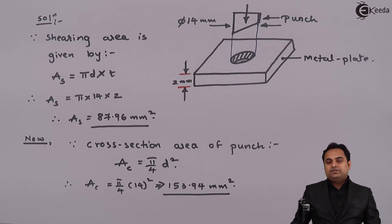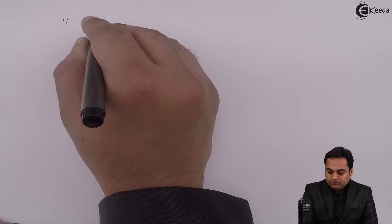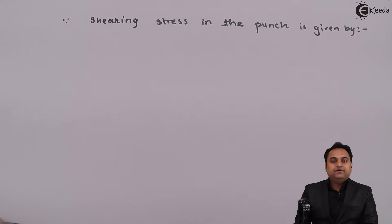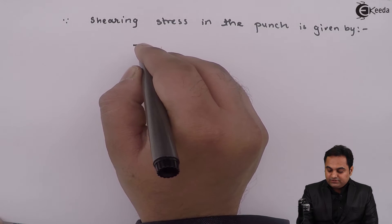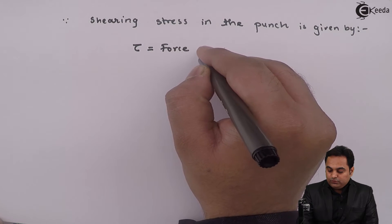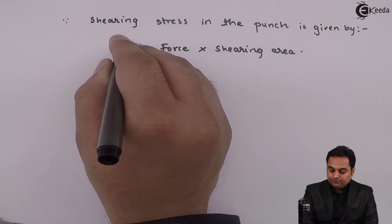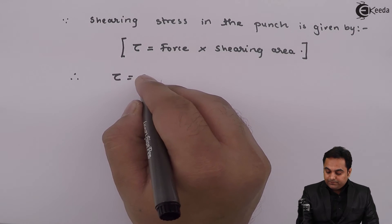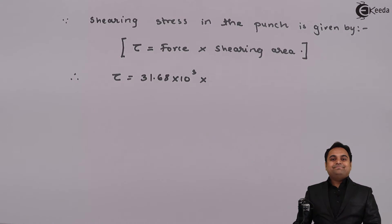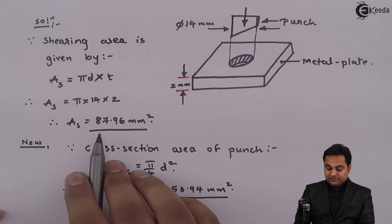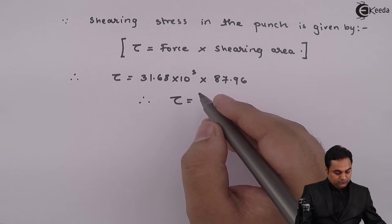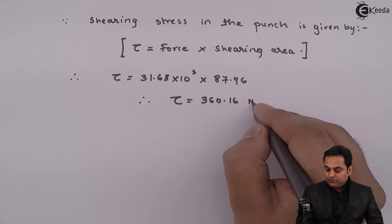After getting the shearing area and the area subjected to compression, we can calculate the respective stresses. Shear stress tau is equal to force divided by shearing area. The force is 31.68 × 10³ N and the shearing area As is 87.96 mm², so the shear stress comes out to be 360.16 N/mm².